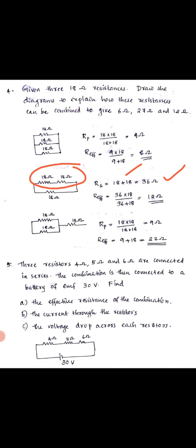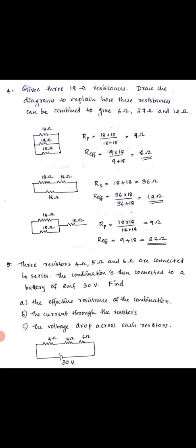For another configuration: two 18 ohm resistors are connected in series, giving 18 plus 18 = 36 ohm. This 36 ohm is then connected in parallel with 18 ohm. Using Rp = R1 into R2 divided by R1 plus R2: 36 into 18 divided by 36 plus 18. The answer is 12 ohm.